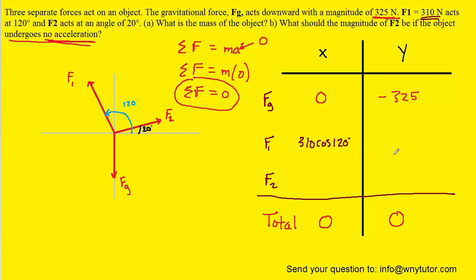Now for the y component, you can always use the sine of the angle as long as that angle is measured from the positive x-axis, as it is in this case. So we're going to take the 310 Newtons and multiply it by the sine of 120 degrees.